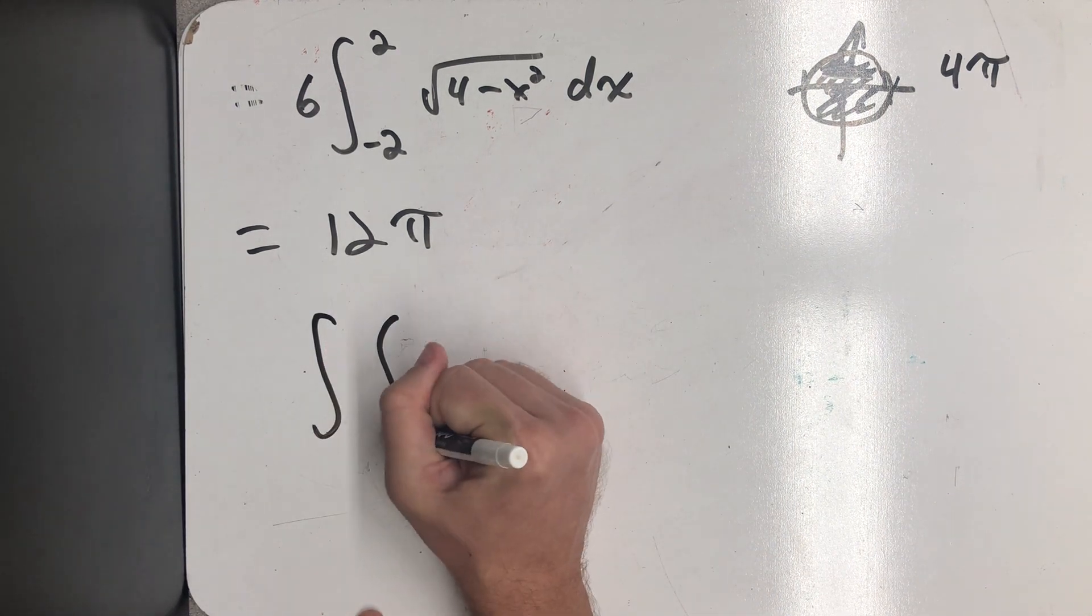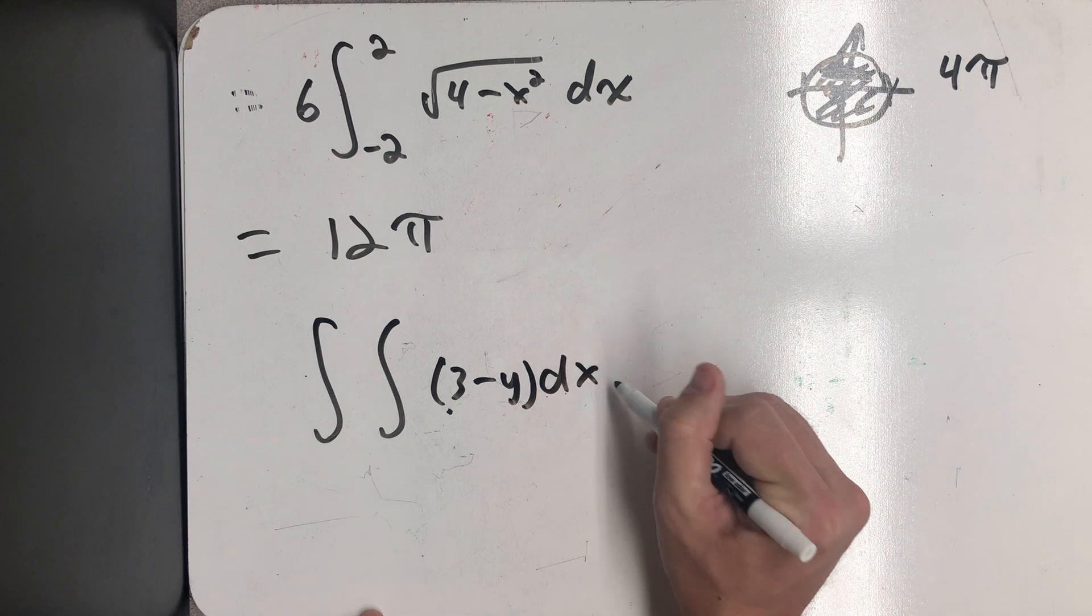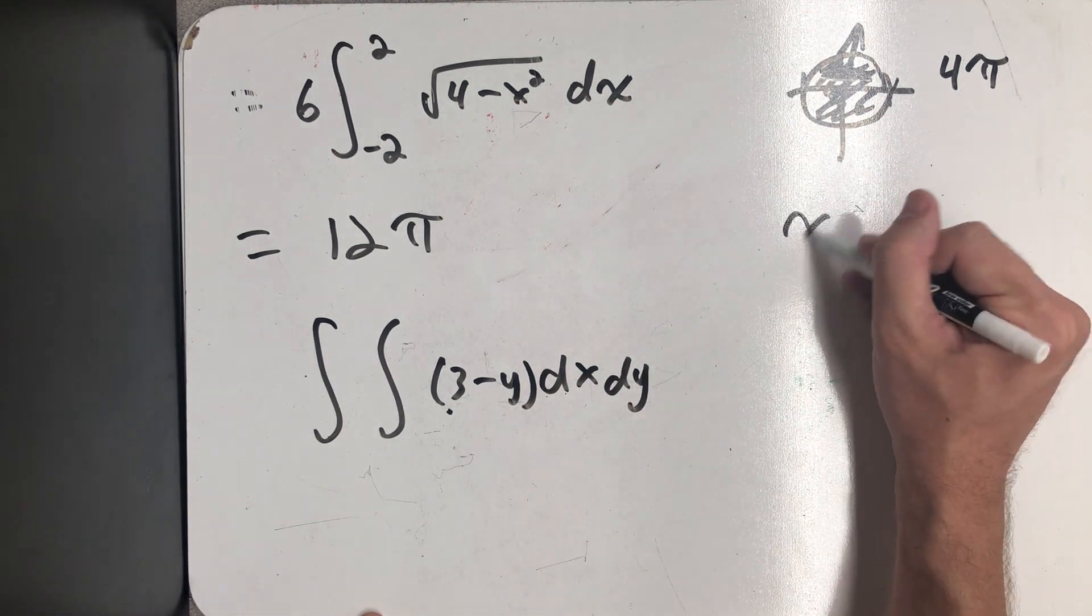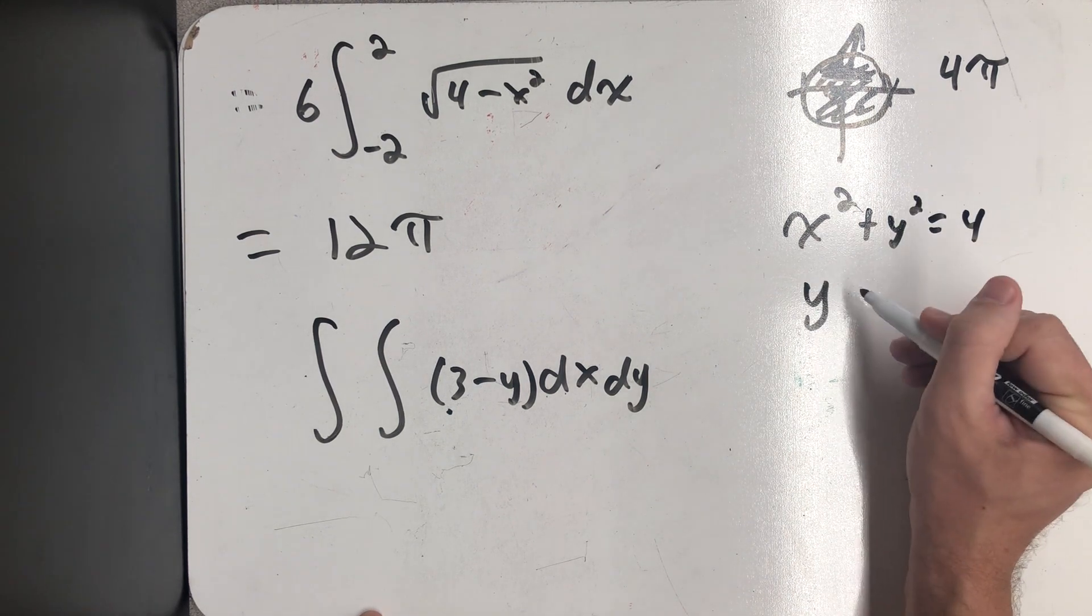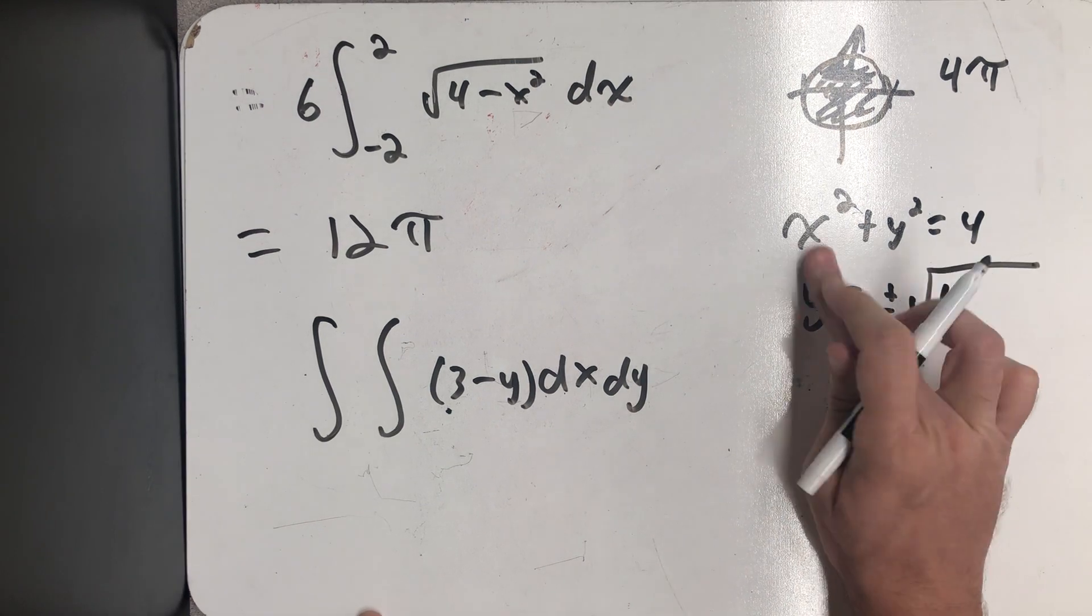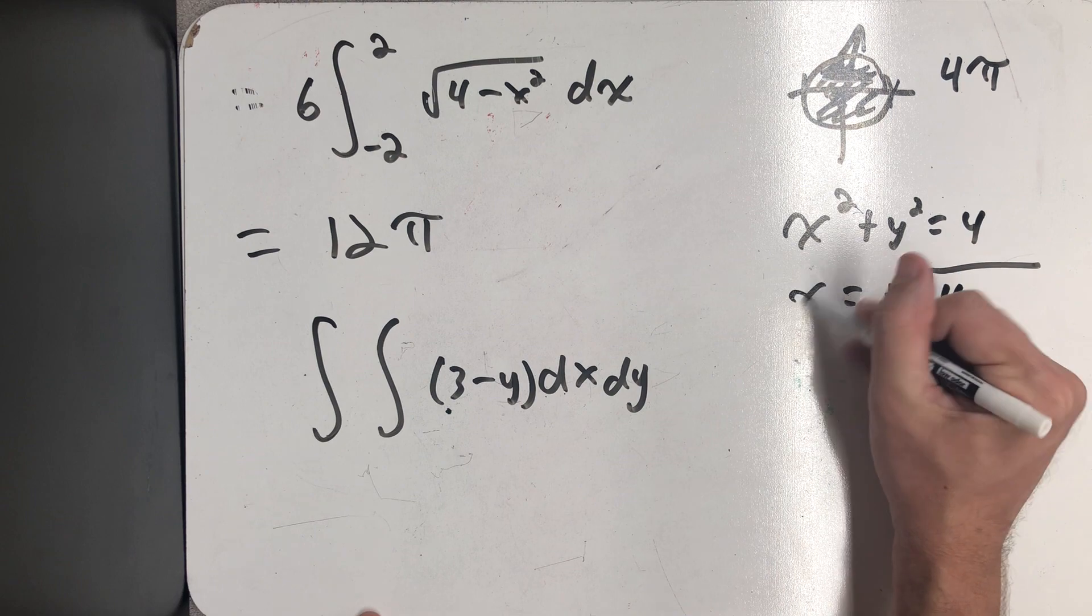My integrand certainly wouldn't change, so 3 minus y dx dy. And this time I'd be thinking about solving for the other variable, which I actually need to solve for the other variable if I'm going to say that.